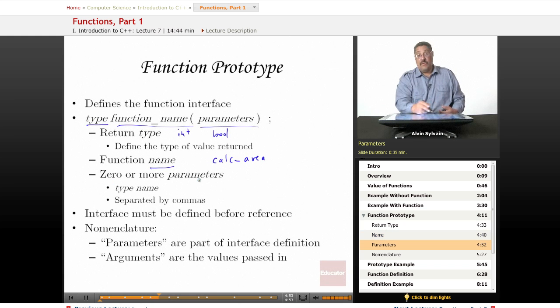And then you have zero or more parameters. And the parameters is usually a type, very often with a name also. So, the int is your type. The name of this particular parameter is side. It turns out you don't need to give it a name for the parameter, but it's useful. It's self-documenting when you do that. And it must be defined before you refer to it.